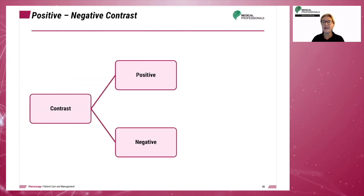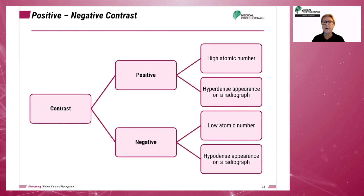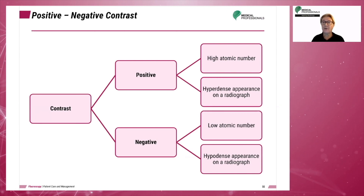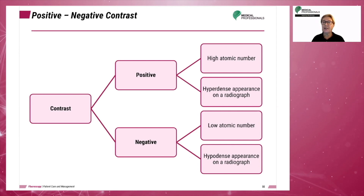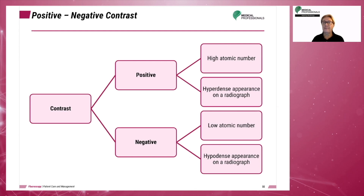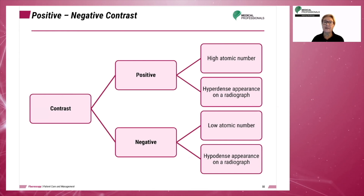Contrast can be positive, meaning it has a high atomic number and will absorb more radiation, giving it a hyperdense appearance on a radiograph. Or contrast can be negative, meaning it has a low atomic number and will absorb less radiation, giving it a hypodense appearance on a radiograph. Barium sulfate or iodinated contrasts are positive contrasts. Room air and carbon dioxide are negative contrasts.